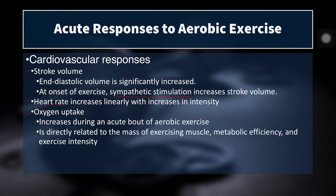Heart rate will increase linearly with exercise intensity. Whereas stroke volume increases and then levels out, heart rate actually increases in a straight line. Oxygen uptake, which increases during aerobic exercise, is directly related to the mass of exercising muscle, metabolic efficiency, and exercise intensity. The more muscle mass you're using, the greater the oxygen demand of the body. So if we really want to stress our body's ability to utilize oxygen, we need to bring a lot of muscle mass into play.